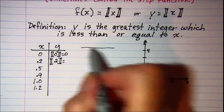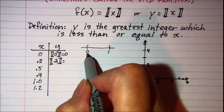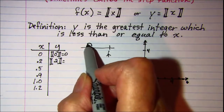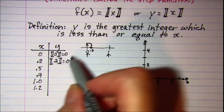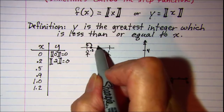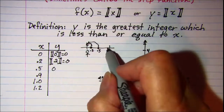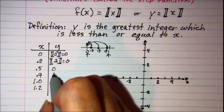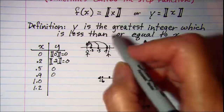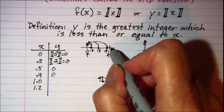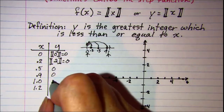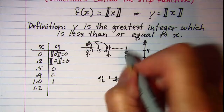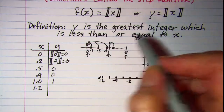If we look at the number line, here's 0 and here's 1 — these are our integers. 0.2 would be about here, so the greatest integer less than or equal to 0.2 is 0. Similarly, 0.5 and 0.9 are both between 0 and 1, so they also go to 0. Now when our argument is 1, the greatest integer of 1 is 1. And 1.2 is between 1 and 2, so the greatest integer of 1.2 is 1.